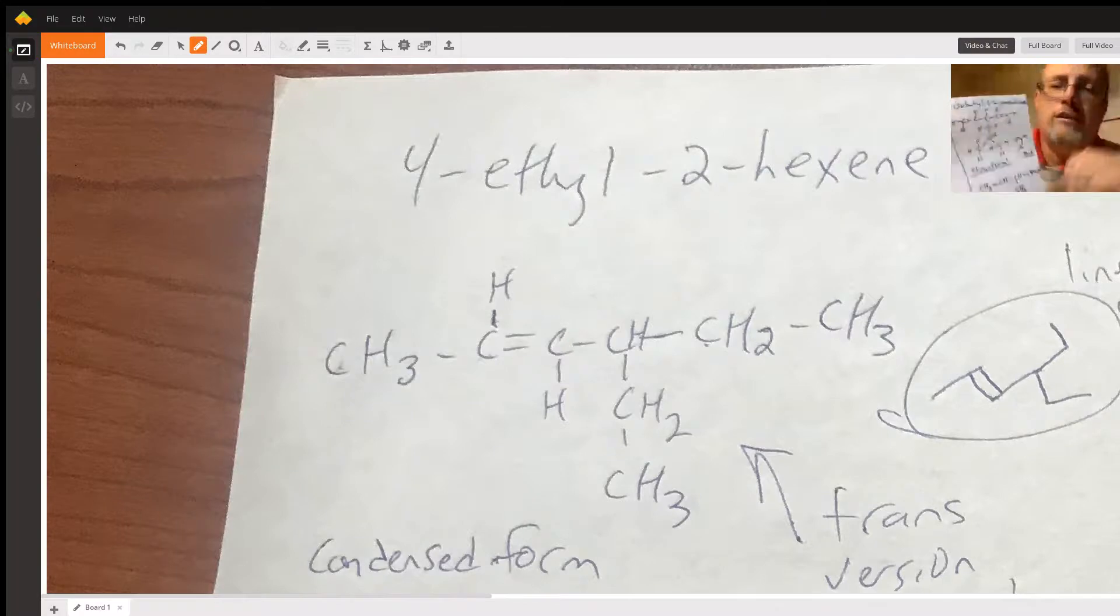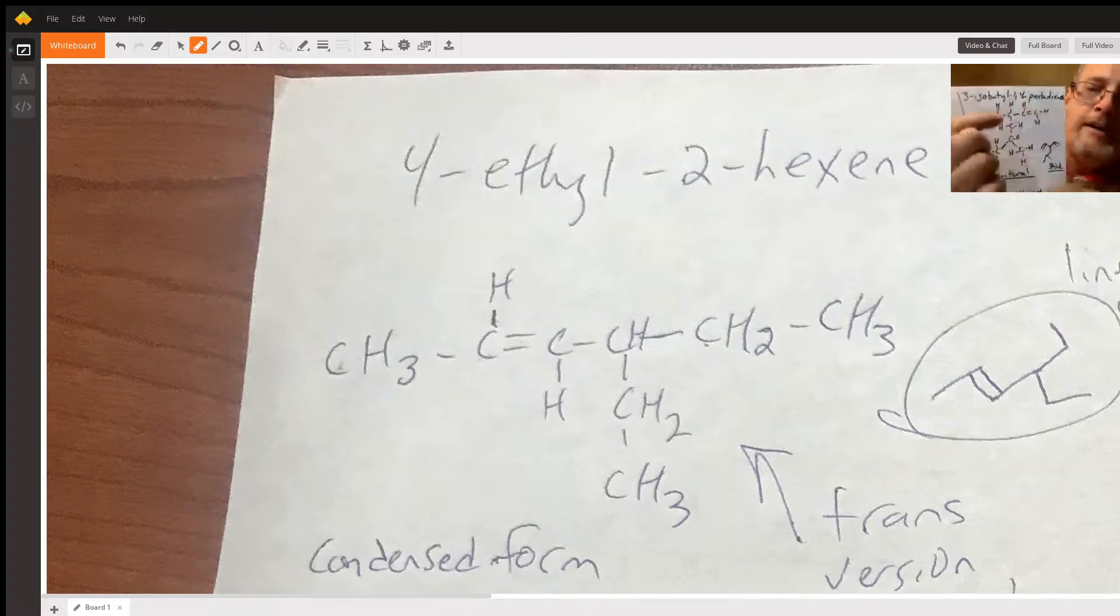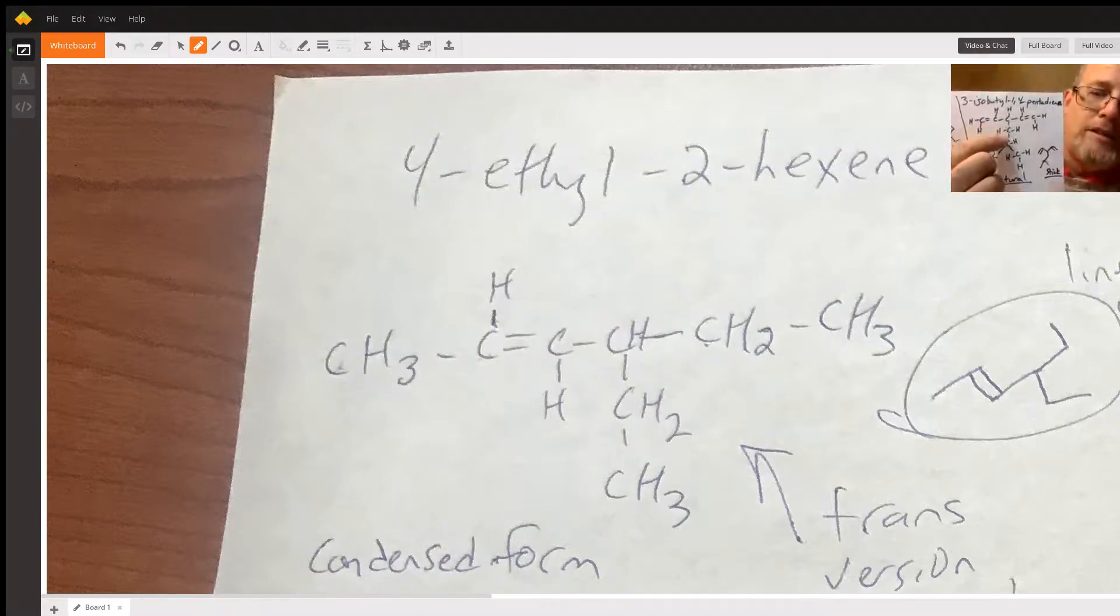Then for the 3-isobutyl-1,4-pentadiene, I've got five carbons like you had with two double bonds at each end. But on the center carbon, you have an isobutyl group, which is four carbons with two carbons connected to our center carbon that we're talking about. And then each of them, two away from that center, each has a methyl group sticking off.